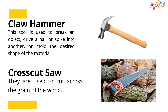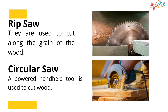Claw Hammer: This tool is used to break an object, drive a nail or spike into another, or mold the desired shape of the material. Cross Cut Saw: They are used to cut across the grain of the wood. Rip Saw: They are used to cut along the grain of the wood. Circular Saw: A powered handheld tool used to cut wood.